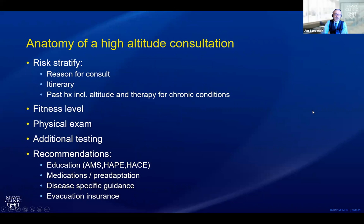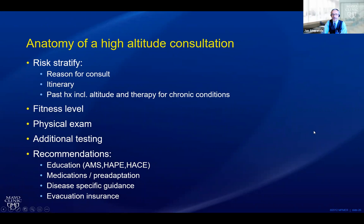When doing a high altitude consultation, we risk stratify — why are you coming? Have you had problems in the past? What is your itinerary and past history? What comorbid conditions do you have and how could they impact you? What's your fitness level? Do you need additional testing? For some individuals, we do hypoxic echos to see what their pulmonary arterial pressures do, or if they shunt right to left when hypoxic. We educate all patients on signs of mountain sickness, pulmonary edema, and cerebral edema. We give medication guidance and disease-specific guidance depending on history, and always highlight the importance of evacuation insurance.